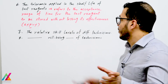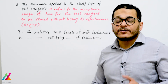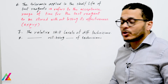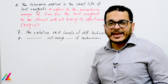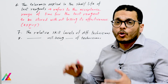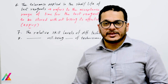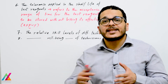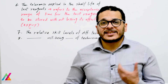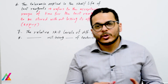The tolerance applied to the shelf life of test reagents — the acceptance range of time for a reagent to be stored without losing effectiveness — is also a source of uncertainty. The relative skill levels of different technicians and the competency of personnel, as well as the well-being of any technician undertaking the analysis, can all affect measurement results and must be included when calculating uncertainty. This can be captured through reproducibility — repeating the analysis different times by different analysts over a long time scale. These are examples of biological, instrumental, and personal bias that affect the accuracy, precision, and certainty of microbiological tests.